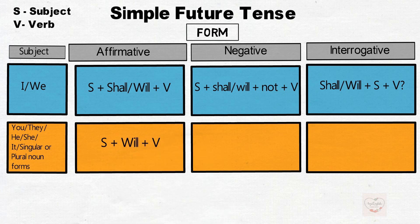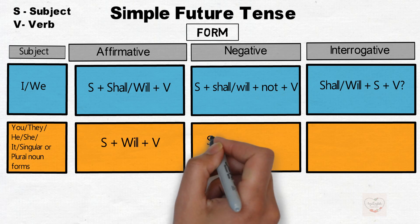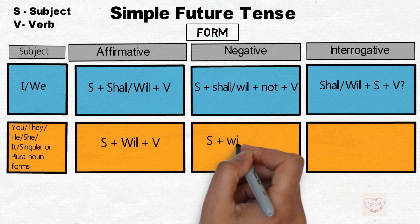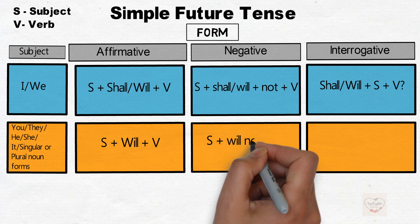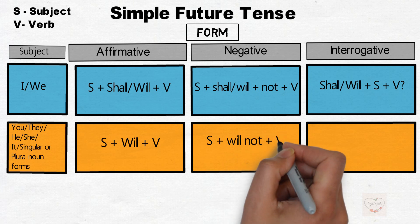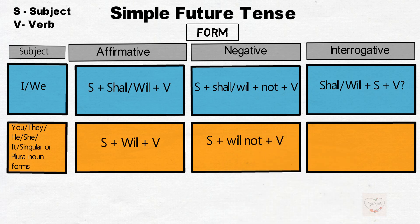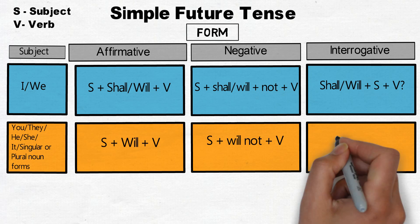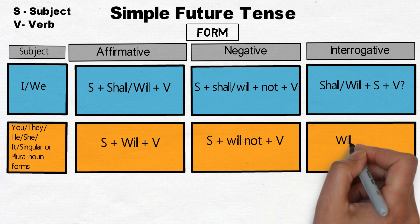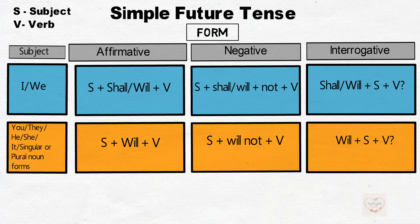The affirmative will be subject plus will plus verb. Negative will be subject plus will not plus verb. Interrogative will be will plus subject plus verb.